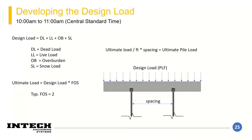The design load comprises a few components: dead load, live load, overburden, and snow load. We're coming up with a line load along the perimeter spread footing. Once you've developed your design load from the tables, you come up with your ultimate load and then your per-pile load. Take the design load and multiply it by a factor of safety — typically two for piles — to get your ultimate load per foot. Multiply that by your spacing to get the ultimate pile load per pile.